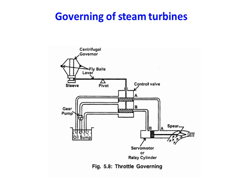When the load increases, the speed will decrease. The fly balls move downward, the sleeve moves downward, and the right portion of the lever moves upward. Valve A opens, and oil flows to the right side of the plunger, moving it backward. This creates sufficient opening to admit more steam to the steam turbine. So, based on the load, either valve A or valve B opens, controlling the spear to admit more or less steam as required. That is throttle governing.